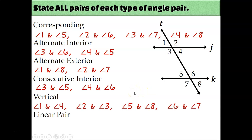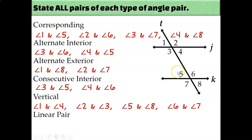For vertical angles, there are four pairs. For every pair of intersecting lines you always get two pairs of vertical angles. From the intersection of line J and line T: angle 1 and angle 4, and angle 2 and angle 3. From the intersection of line T and line K: angle 5 and angle 8, and angle 6 and angle 7.